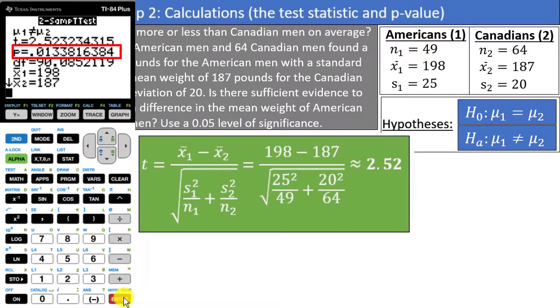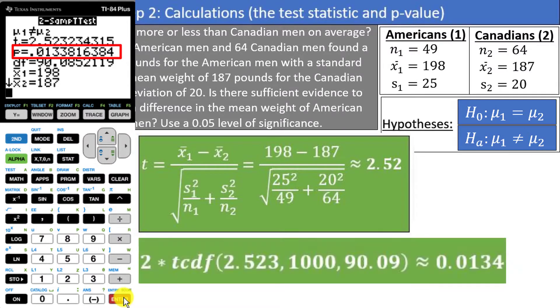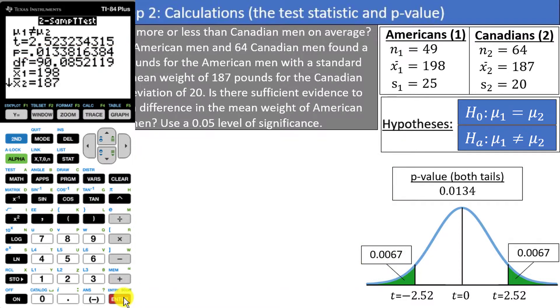The p-value of 0.0134 could be obtained by the use of the tCDF function, which we have looked at in other videos. We can create the graph if we would like to, which would look something like this, with half of the p-value in each tail, as we have a two-tailed test.